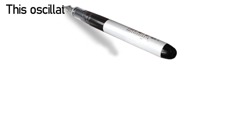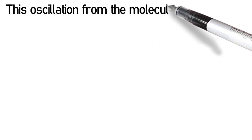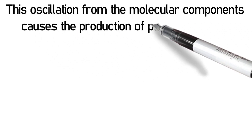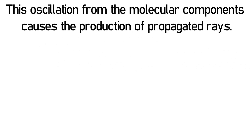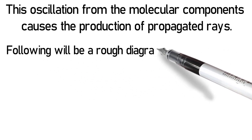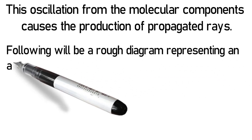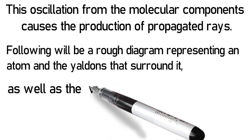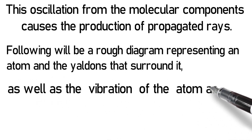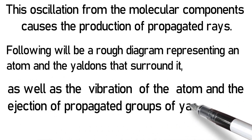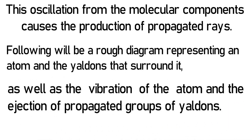This oscillation from the molecular components causes the production of propagated rays. Following will be a rough diagram representing an atom and the Yaldins that surround it, as well as the vibration of the atom and the ejection of propagated groups of Yaldins.